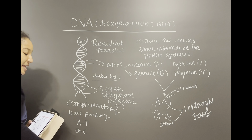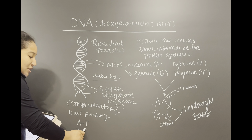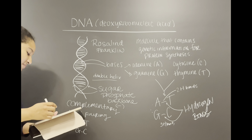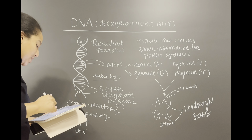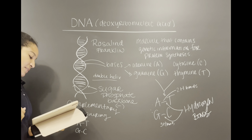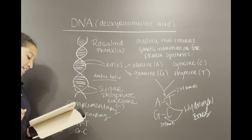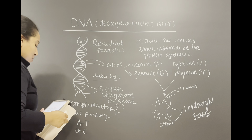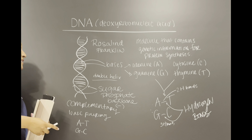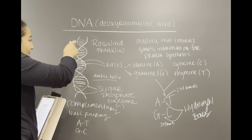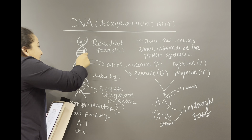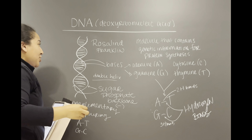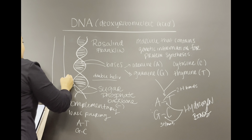This is called complementary base pairing, in which A pairs with T and G pairs with C, and vice versa. C will not go to A, and G will not go to T — they have to go with their respective pair. So make sure you keep that in mind.